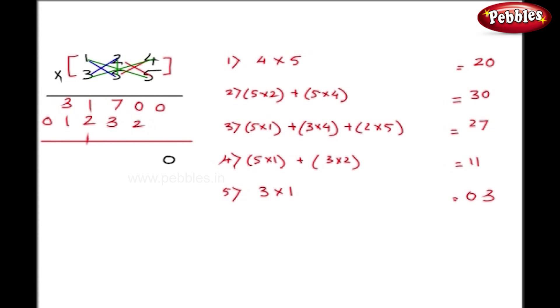So I get 0 here, then 0 here. 7 plus 3 is 10, here I will get 4, then 4 again. So my final answer is 44020.